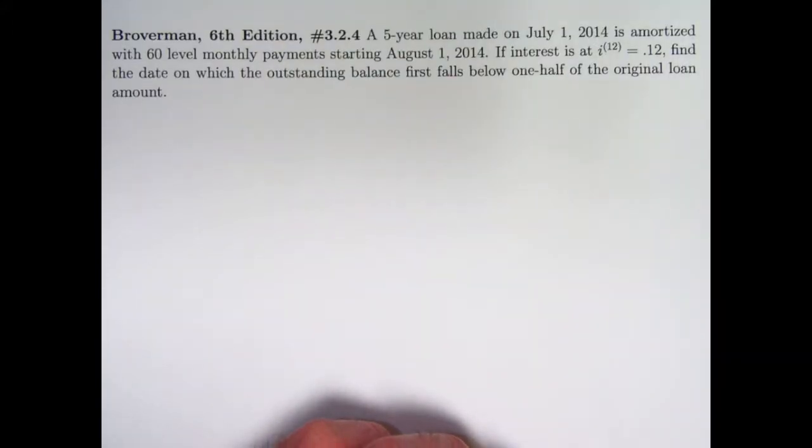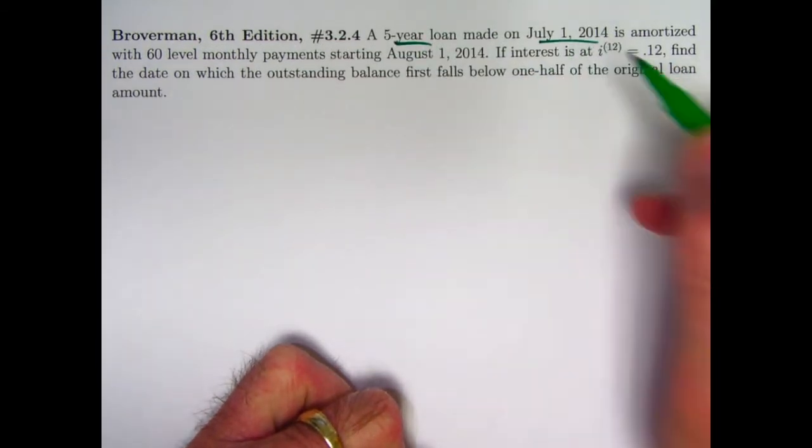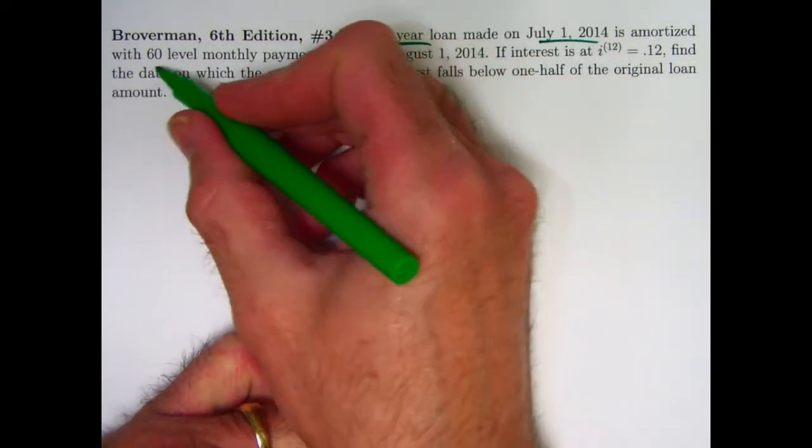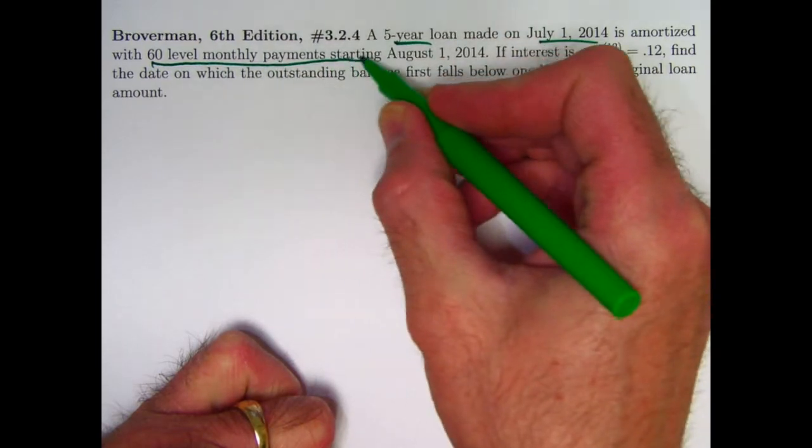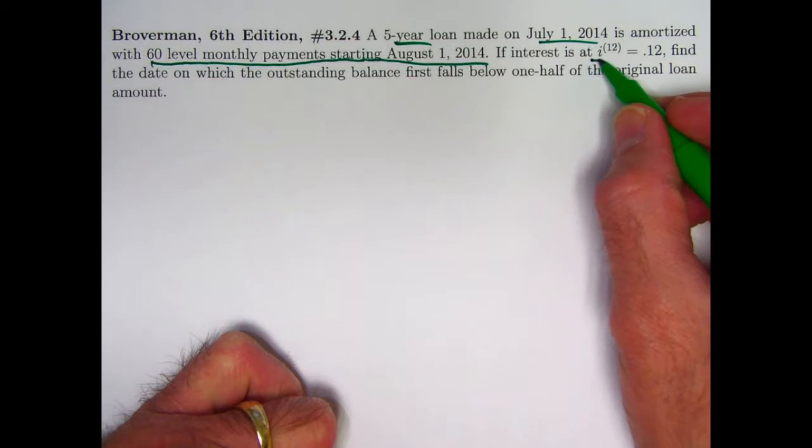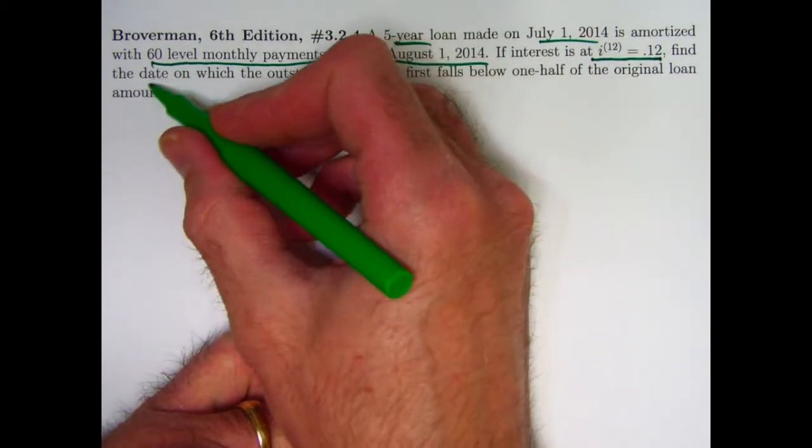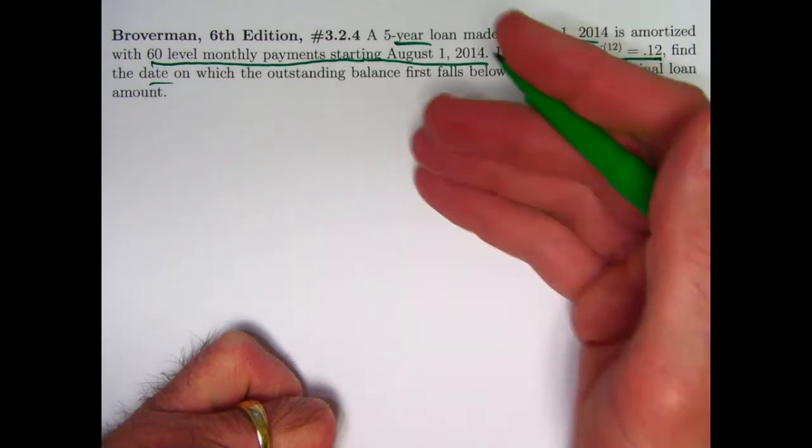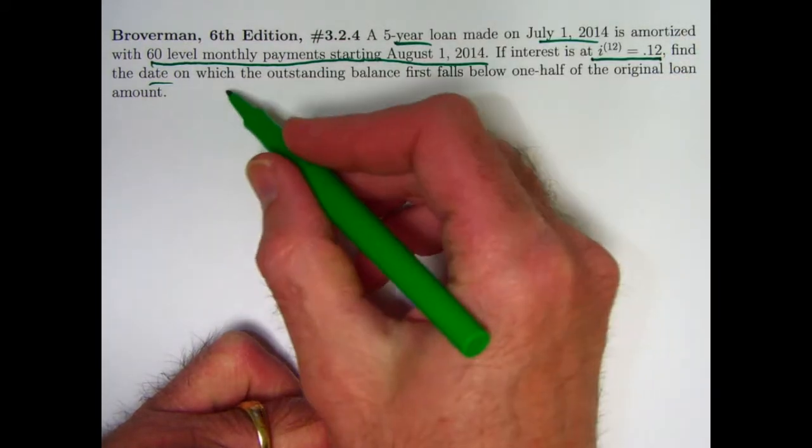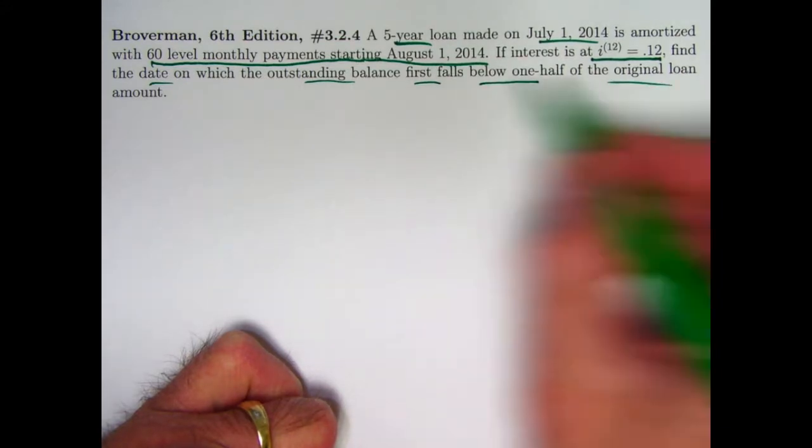It's kind of interesting. It's a five year loan made at a certain date here, amortized with 60 level monthly payments starting at this date and the nominal annual interest rate compounded monthly is 12%. Find the date, so that would be a certain day and a certain year, on which the outstanding balance first falls below one half the original loan amount.